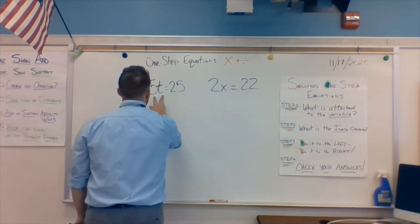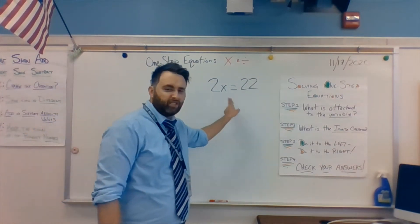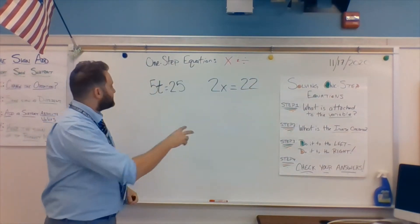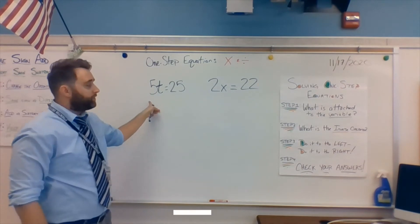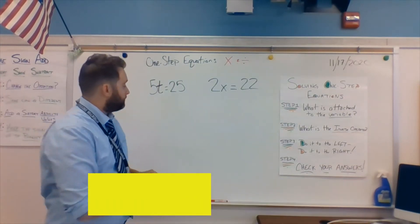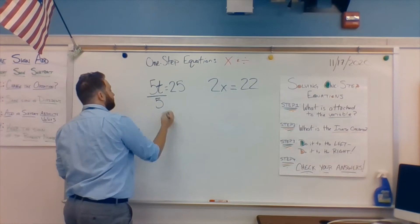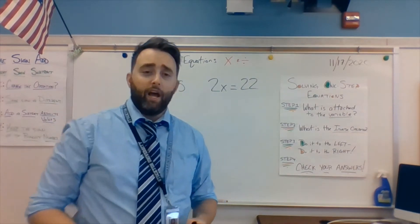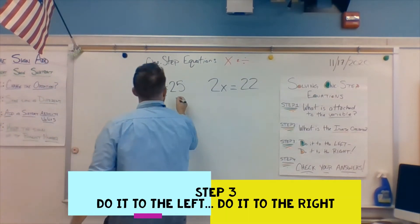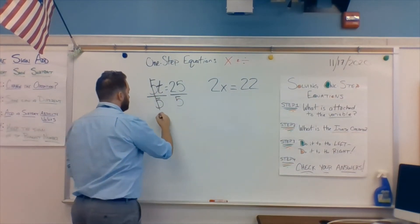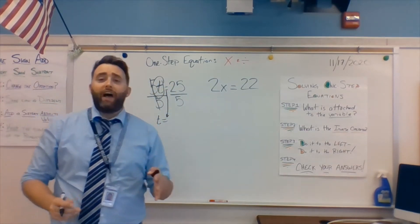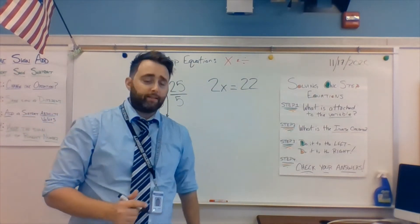I'm going to switch one word. The word attached. What number is stuck? Stuck to that variable. Okay? Because like you see here, this 5 is stuck to that t. This 2 is stuck to that x. So, the question is, what is attached to the variable? What is stuck to the variable? 5. 5 is stuck to the variable. Good. What's the inverse operation of multiplying by 5? What's the opposite of multiplying by 5? Divided by 5. So, divided by 5, that'll cancel that out. That cancels the 5 out on the left side. But, step 3. You do it to the left, you do it to the right. Very good. Bring down the t. Bring down the equals. 25 divided by 5. 25 divided by 5 is? You guessed it. Yes. 5.